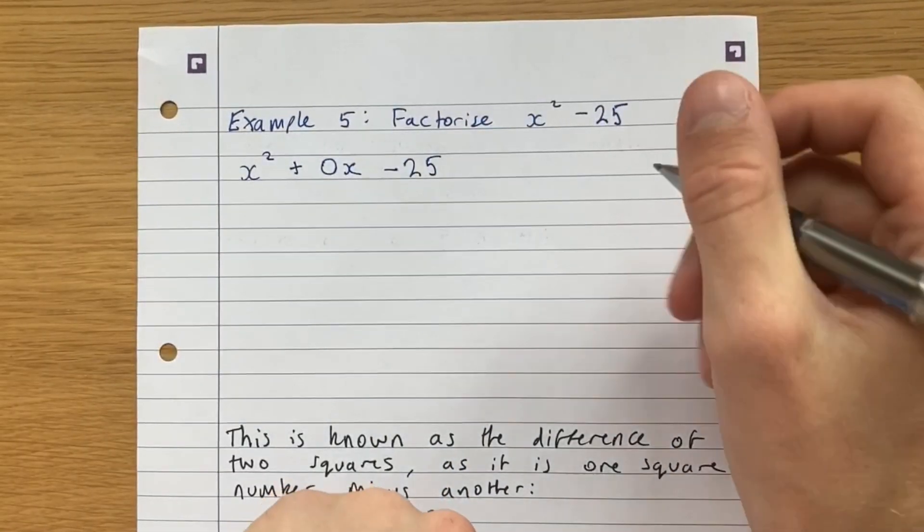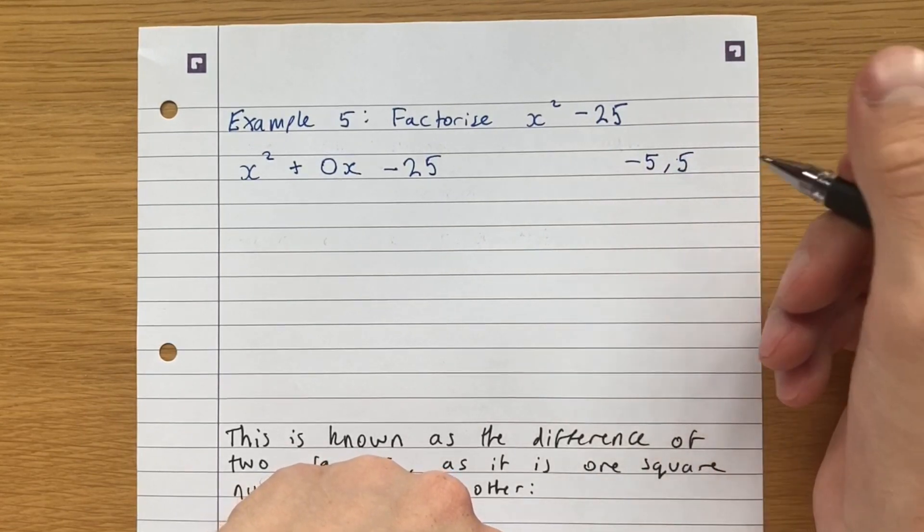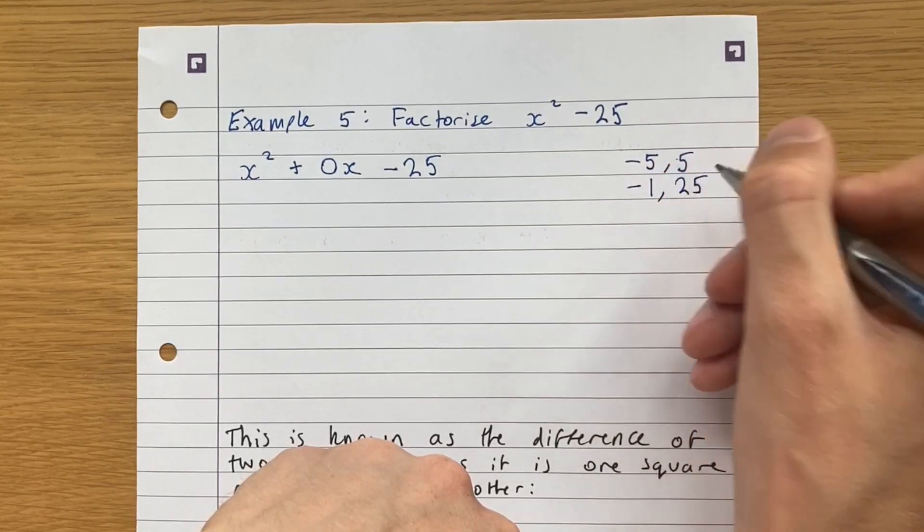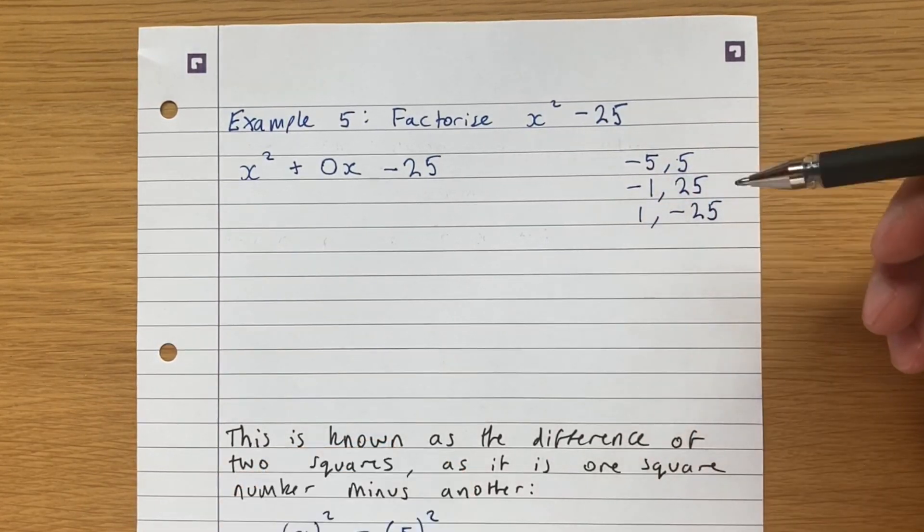So factors of 25, or the pairs, we could have minus 5 and 5, minus 1 and 25. We could have 1 and minus 25. And so what do we notice here?